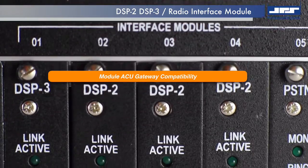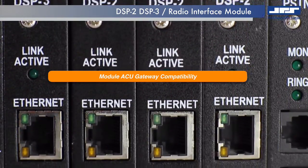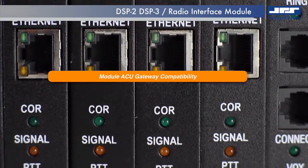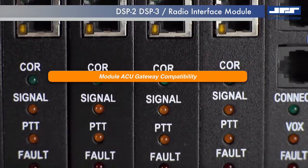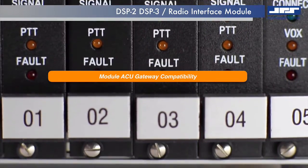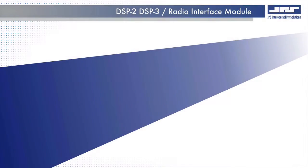DSP modules are compatible with the entire JPS modular gateway line, including the ACU1000, ACU2000, and ACUT interoperability gateways.